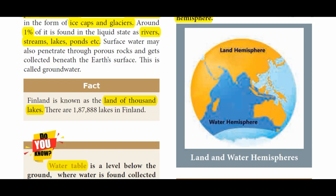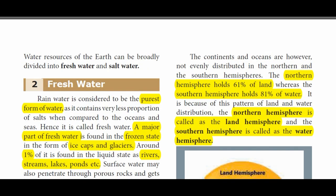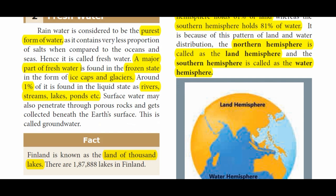The northern hemisphere holds 61% of the land. If you look at the map, the northern hemisphere is a land hemisphere and the southern hemisphere is a water hemisphere. In the northern hemisphere, there is 61% of land. In the southern hemisphere, there is 81% of water.